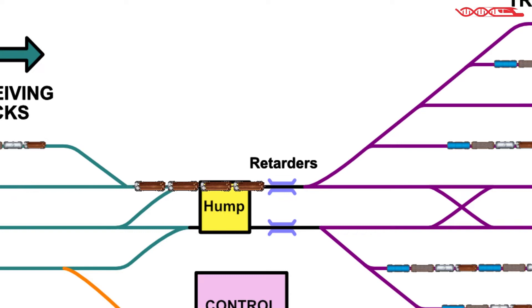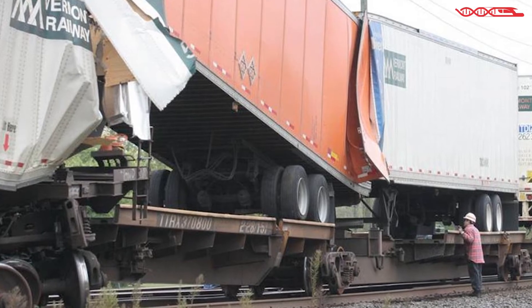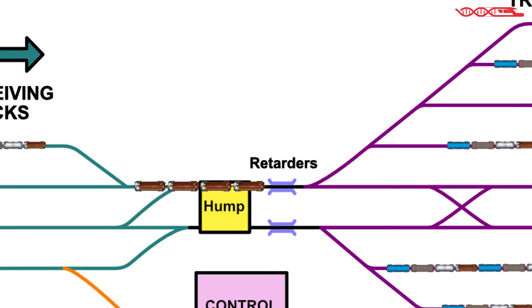But sometimes it happens that rail cars are pushed too hard and there is a big chance that they will hit other cars in classification tracks with big force. This could lead to serious incidents.